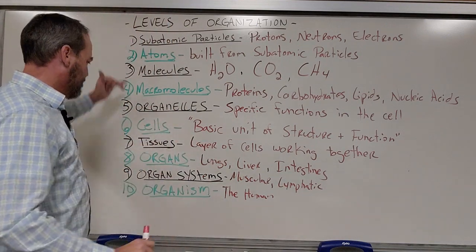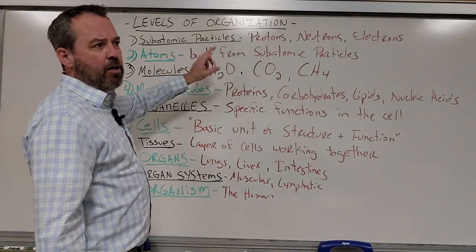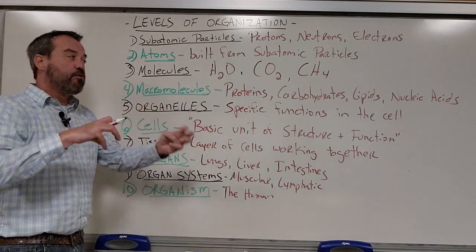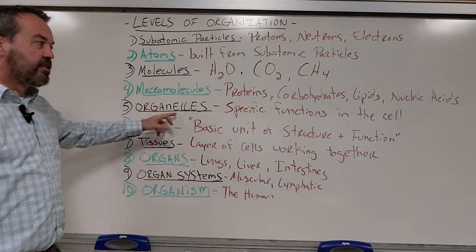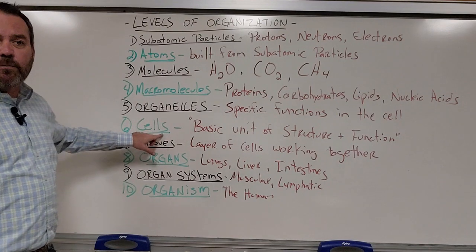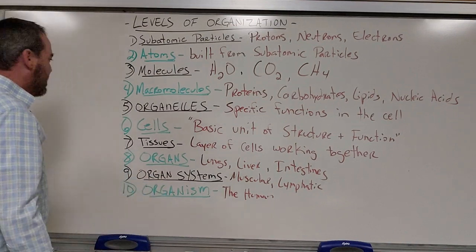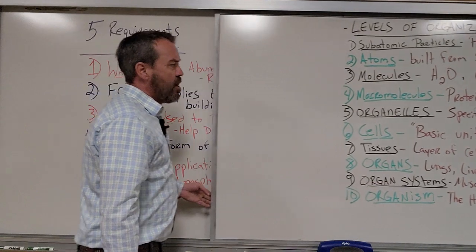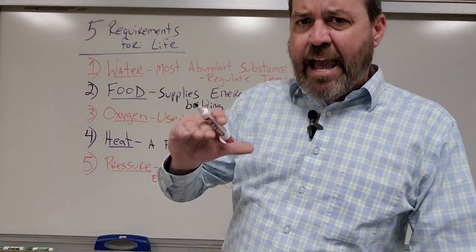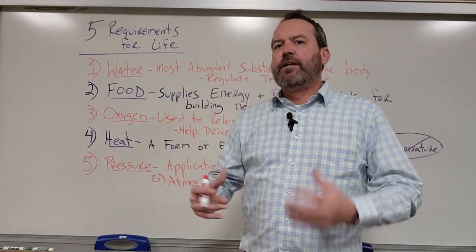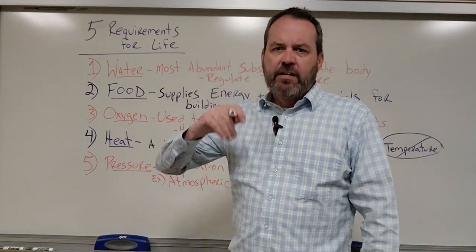So with my levels of organization, you have to be able to list these 1 through 10 in order: subatomic particles, atoms, molecules, macromolecules, organelles, cells, tissues, organs, organ systems, and the organism. Somewhere between the subatomic particles and the human, life happened. Our subatomic particles are not alive, but the human absolutely is — somewhere in that process, life occurs.